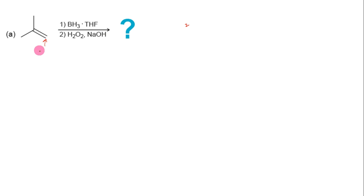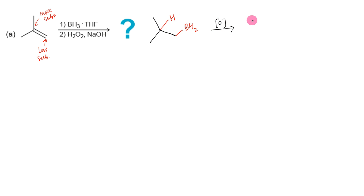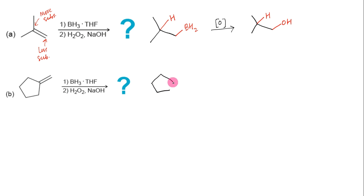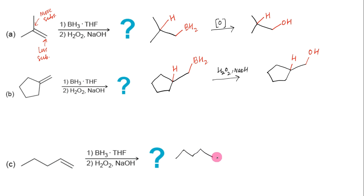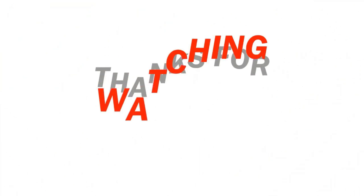Let us check our understanding by writing the products for these hydroboration-oxidation reactions. The first step is the syn addition of BH₃ to the alkene, with BH₂ on the less-substituted end and hydrogen on the more-substituted end. The second step is oxidation, which replaces BH₂ with an OH group. The same approach applies to the remaining examples, giving hydration across the alkene double bond with anti-Markovnikov orientation.